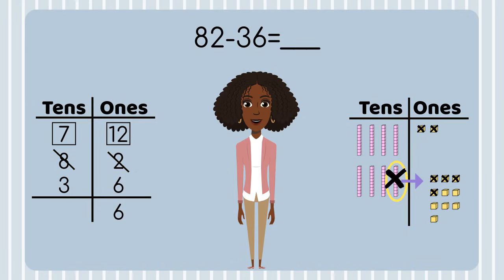Now I can subtract the tens place. I don't have eight tens anymore because I moved a ten into the ones place — I have seven tens now, and I need to take away three: one, two, three. I have four tens left. I'll put a four in the tens place. 82 minus 36 equals 46.